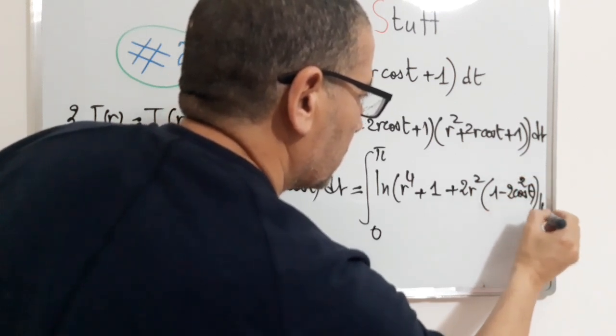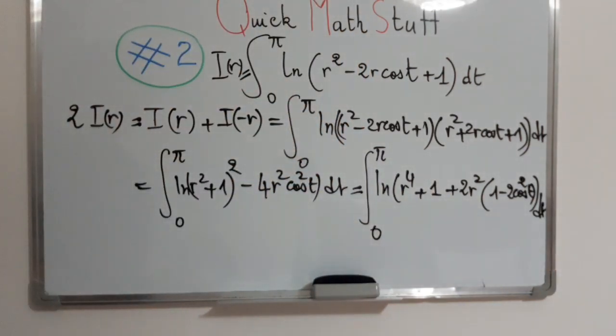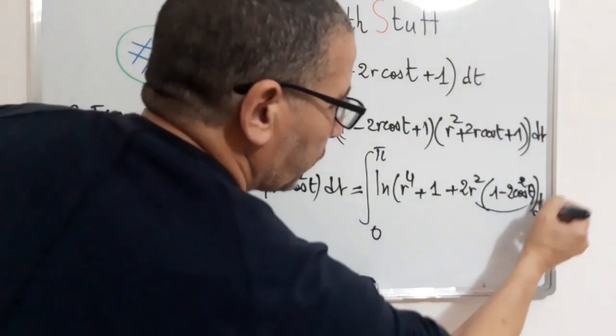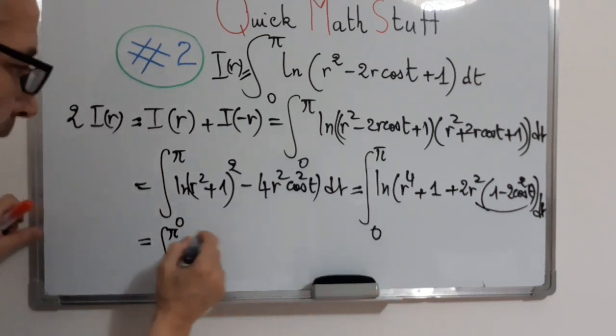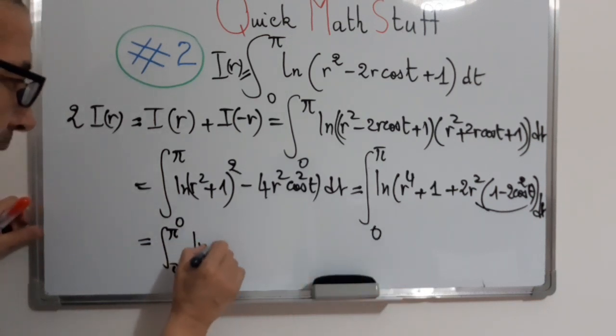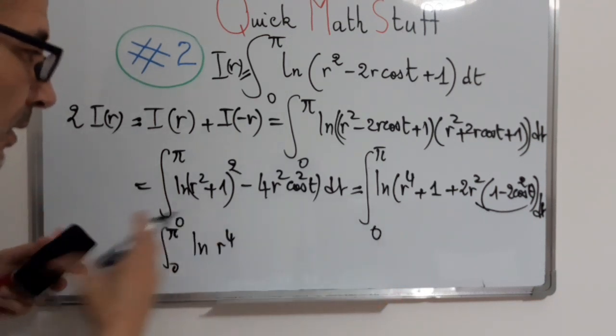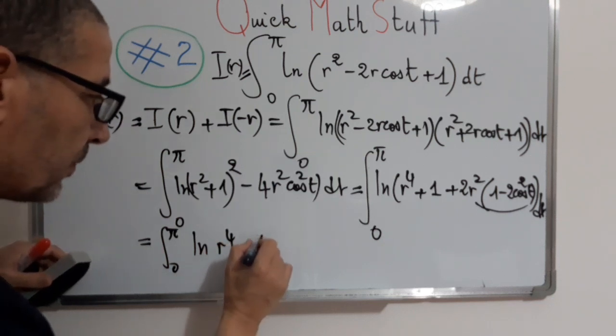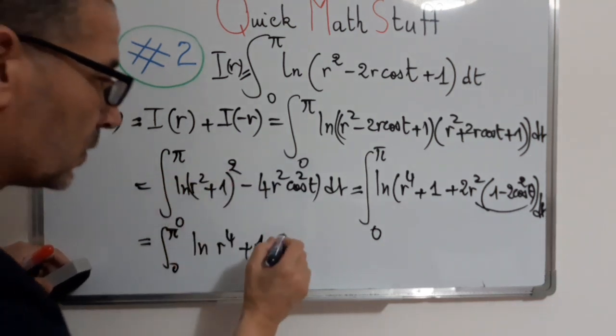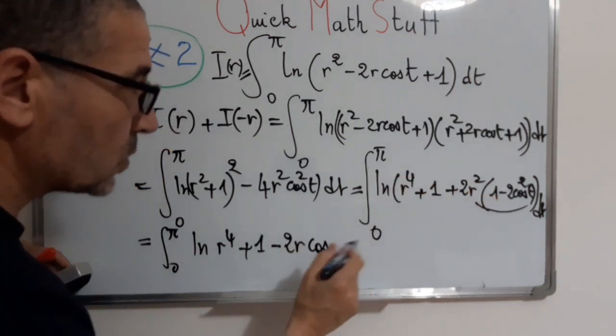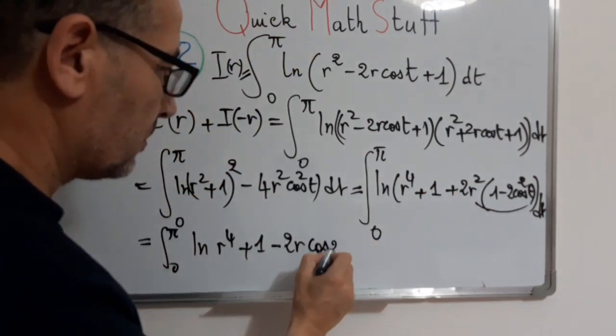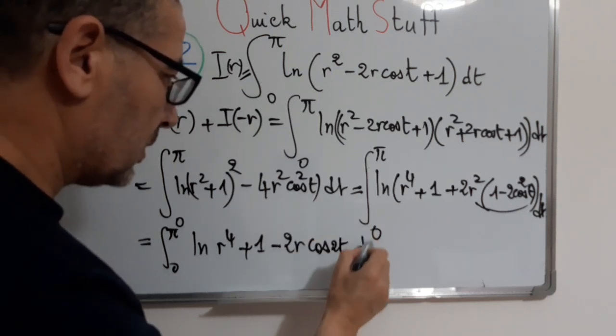1 minus 2 cosine squared t dt. Now you see here the trigonometric formula, which gives integral from 0 to π of ln of r to the fourth plus 1 minus 2r squared cos 2t dt.